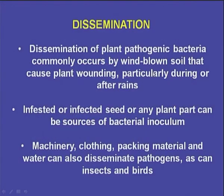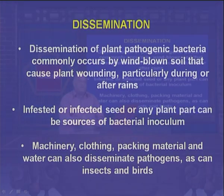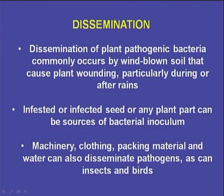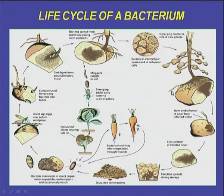We now come to the dissemination of bacteria — when plants are affected, how do they disseminate the disease to other healthy plants? Dissemination of plant pathogenic bacteria commonly occurs by wind-blown soil that causes plant wounding, particularly during or after rains. Infested or infected seed or any plant part can be sources of bacterial inoculum. Machinery, clothing, packing material, and water can also disseminate pathogens, as can insects and birds.